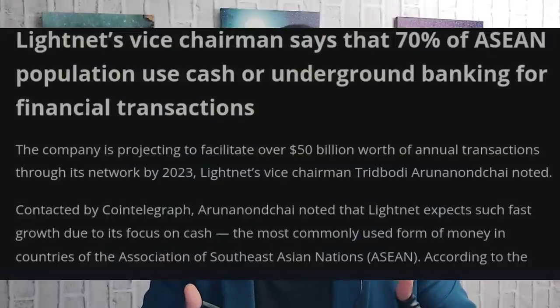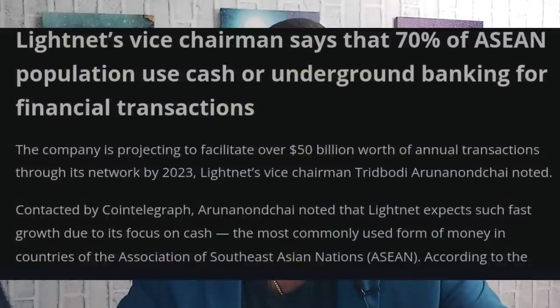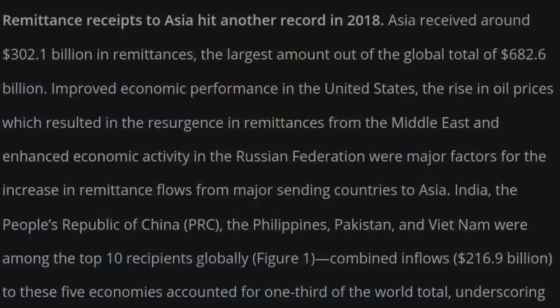As businesses, people, and banks in those regions begin to see the success of utilizing the system, you're going to see everything start to spread out and increase. Looking at remittance data for Asia from 2018 from aric.adb.org: Asia received around $302.1 billion in remittances — the largest amount out of a global total of $682.6 billion. This is what we're talking about, and that's just a piece — not intra-bank payments, not B2B.